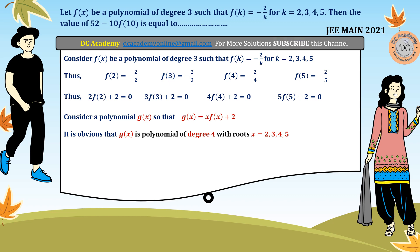Why? Because see that g(2) is equal to 2f(2) plus 2, which is equal to 0. g(3) is 3 into f(3) plus 2 equal to 0, and so on. So therefore it is obvious that g(x) has roots at 2, 3, 4, 5.